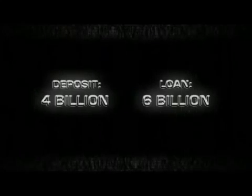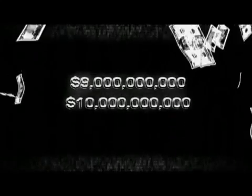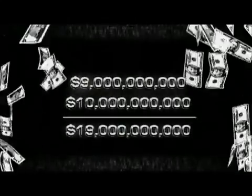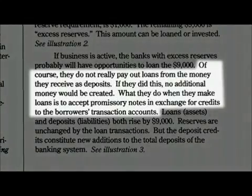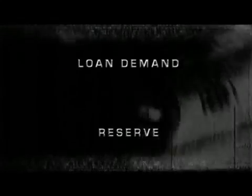Now, it is logical to assume that this $9 billion is literally coming out of the existing $10 billion deposit. However, this is actually not the case. What really happens is that the $9 billion is simply created out of thin air on top of the existing $10 billion deposit. This is how the money supply is expanded. As stated in Modern Money Mechanics, they do not really pay out loans from the money they receive as deposits. What they do when they make loans is to accept promissory notes in exchange for credits to the borrower's transaction accounts. The $9 billion can be created out of nothing simply because there is a demand for such a loan and there is a $10 billion deposit to satisfy the reserve requirements.